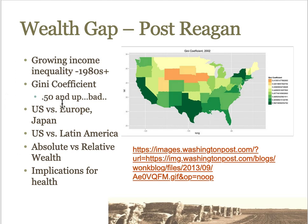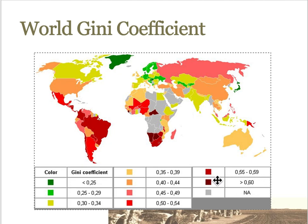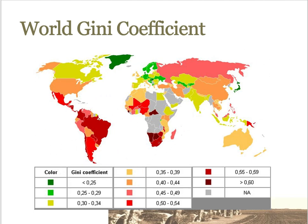For the Gini coefficient, a value of 0.50 and up indicates high inequality. The Gini coefficient measures inequality on a scale from zero to one, where higher values indicate higher inequality. On the map, the red areas represent countries with higher inequality values.